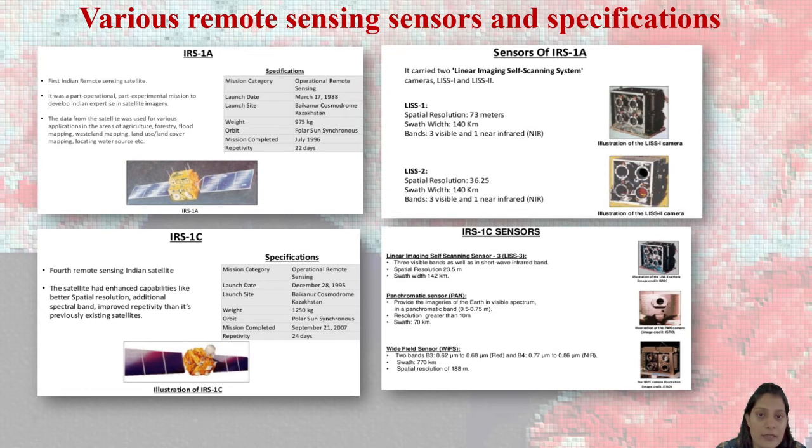LIS 2. Again, in the series of IRS 1A, we have prepared other sensor which is known as LIS 2 which has a spatial resolution of 36.25 meter. Three visible and one near. You can see we are making the pixel in such a clarity that we can get information and we can rectify or identify the information which we are capturing.